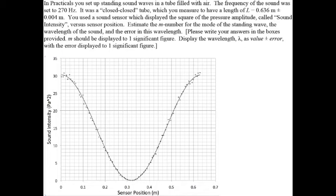You used a sound sensor, which displayed the square of the pressure amplitude, called sound intensity, versus sensor position. Estimate the m number for the mode of the standing wave, the wavelength of sound, and the error in this wavelength.